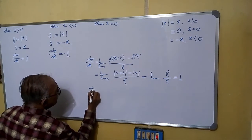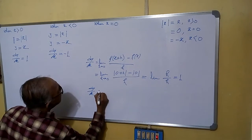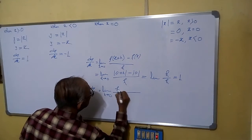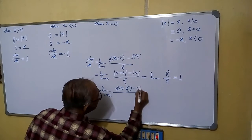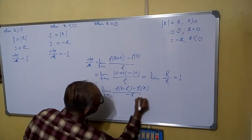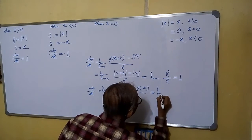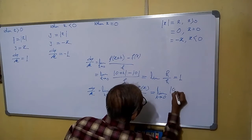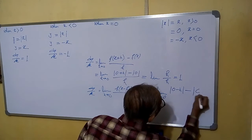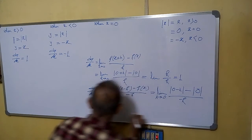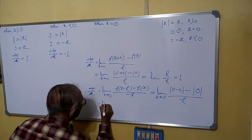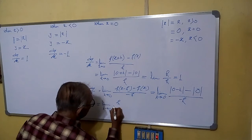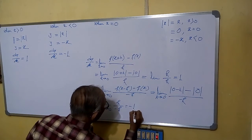Now we will calculate the left-hand derivative. For the left hand, it is limit h tends to 0 of f(x minus h) minus f(x), all divided by minus h. That is limit h tends to 0 of mod(0 minus h) minus mod(0), divided by minus h. Mod of minus h is h, and mod 0 is 0, so we get h divided by minus h, which equals minus 1.